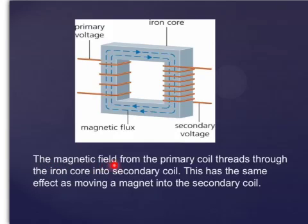The magnetic field from the primary coil threads through the iron core into the secondary coil, as indicated by these closed loops of field lines. This has the same effect as moving a magnet into the secondary coil.